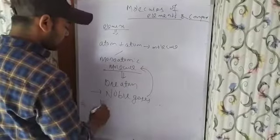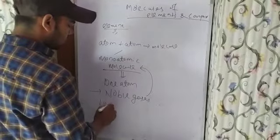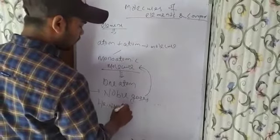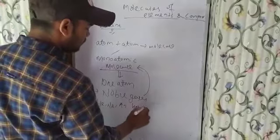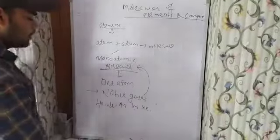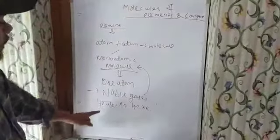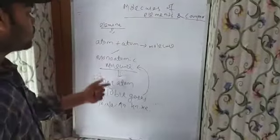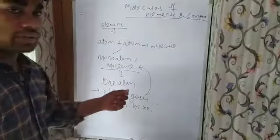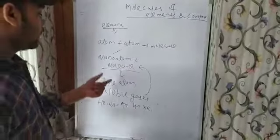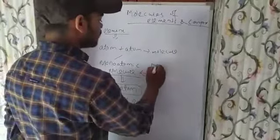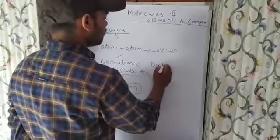What are noble gases? Helium, Neon, Argon, Krypton, Xenon. Radon is a radioactive element, so we consider Helium, Neon, Argon, Krypton, and Xenon as monoatomic molecules — they contain only one atom. But in a diatomic molecule,